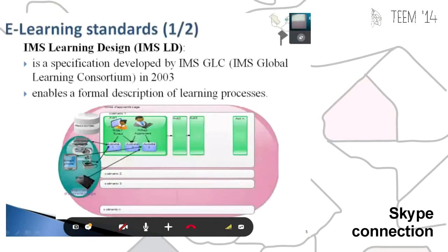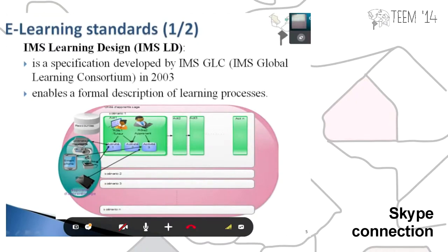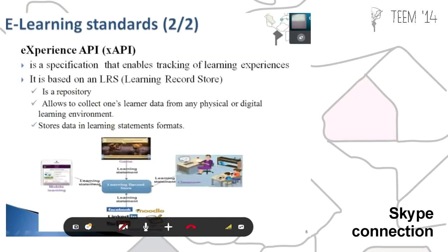The IMS LD standard is a specification developed by IMS and it enables a formal description of the learning process. The first part of IMS LD is that the process of learning deals with activities and interactions between peers and the virtual life. The second part of the learning experience is based on a learning resource, which is a repository that allows connecting data from a project in a digital environment.